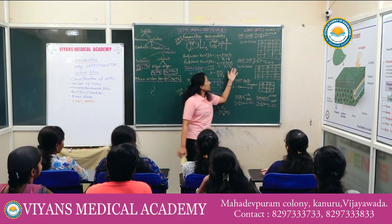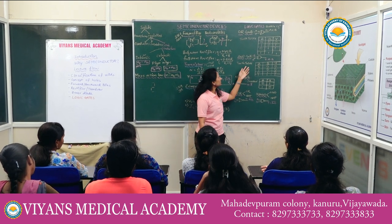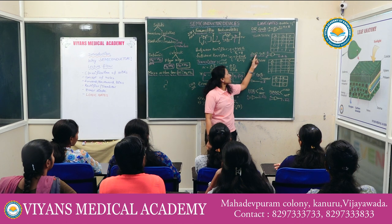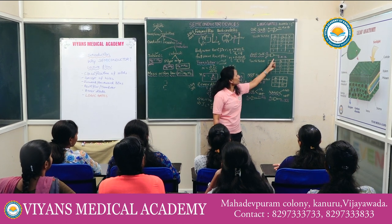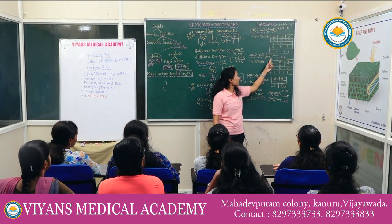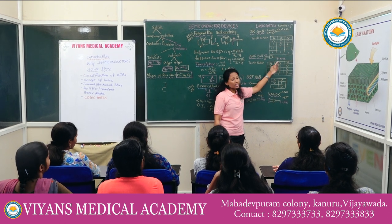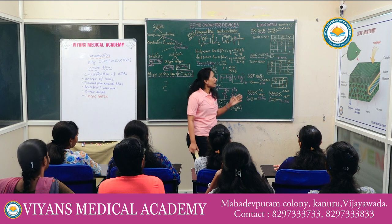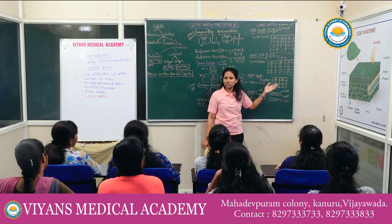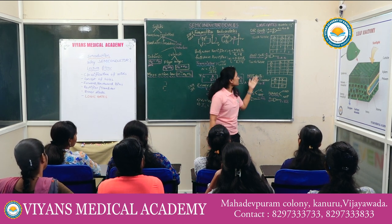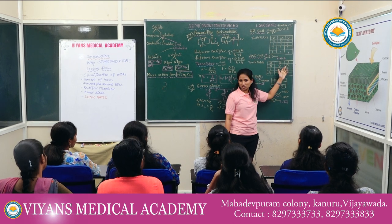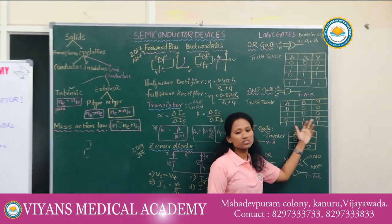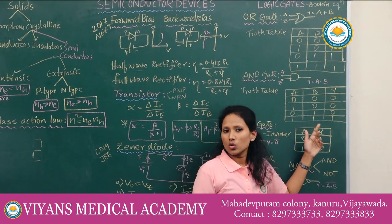In the AND gate, the symbol resembles the letter D — easy to remember. The output Y = A AND B, not A × B, though you can use multiplication to get the answer: 0×0=0, 1×0=0, 0×1=0, and 1×1=1.